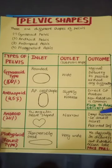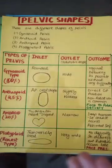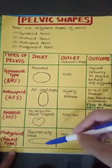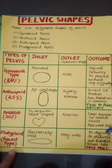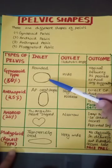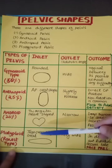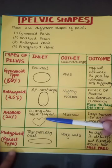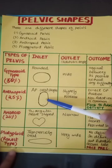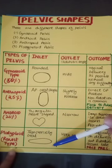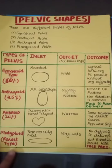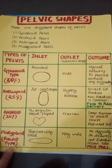The platypelloid pelvis is the rarest form. It is transversely oval. The outlet is narrow but delivery is not impossible; however, anterior rotation occurs late. In a rounded-shaped pelvis rotation is easy, whereas in the platypelloid shape rotation is delayed. Face presentation with the baby can occur in the platypelloid pelvis. That covers all the pelvic shapes.